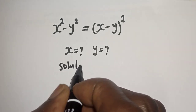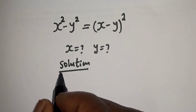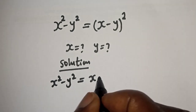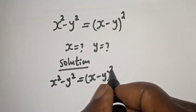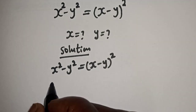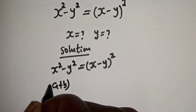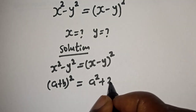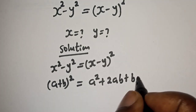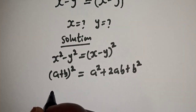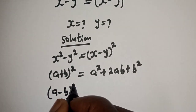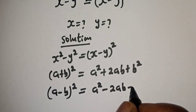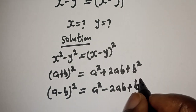Solution. We have x squared minus y squared is equal to x minus y, all squared. Take note that if you have (a + b) squared, this is equal to a squared plus 2ab plus b squared. And also if you have (a - b) squared, this is equal to a squared minus 2ab plus b squared.